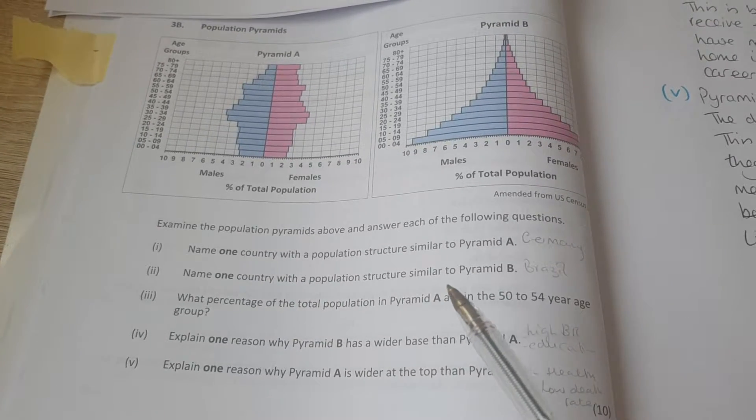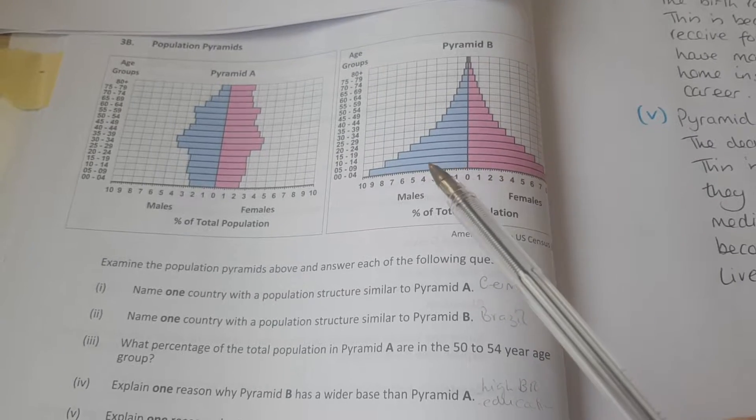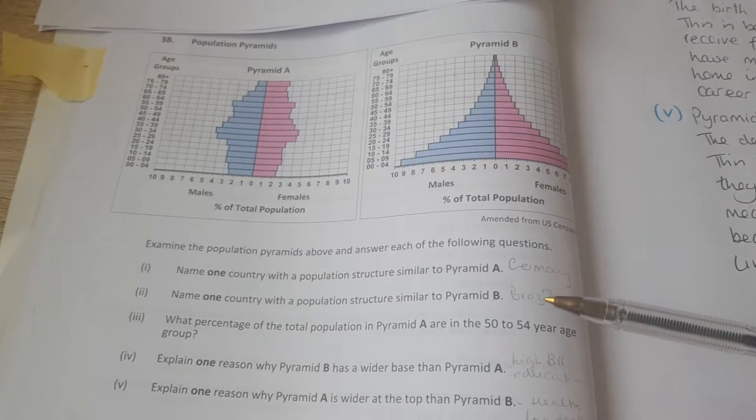Name one country with a population structure similar to pyramid B. So we have a high birth rate and quite a high death rate at young ages, and that's going to be Brazil because you would have studied that already.